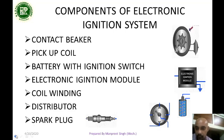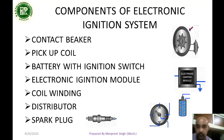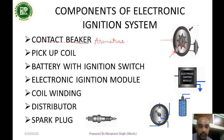Let's see the components. This is the contact breaker. This is the armature. The armature is rotating. This is the pickup coil. This is the battery with the ignition switch.